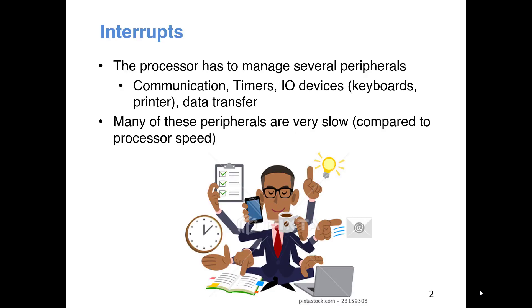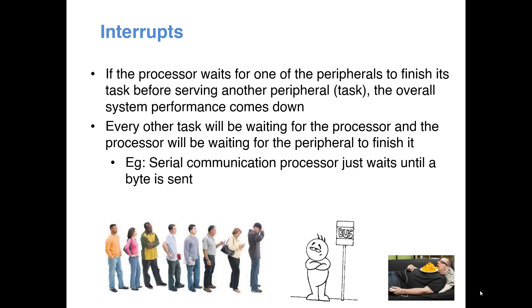As you know, the processor in a computer has to manage several peripherals — maybe communication devices, timers, input/output devices, data transfer devices, etc. Most of these peripheral devices are quite slow compared with the speed of the processor. So if the processor waits for one peripheral to finish a task before serving another, the overall system performance will come down. For example, if you have a printer and you wait for it to finish printing before doing something else, the overall system performance comes down.